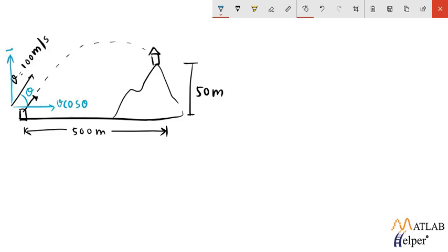Let's consider the horizontal motion first. So in the horizontal motion our velocity is given by v cos theta. The distance that has to be traveled in the horizontal direction is 500 meters.